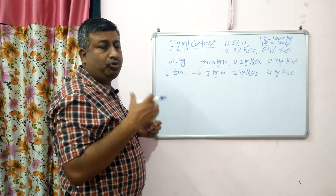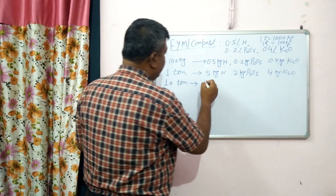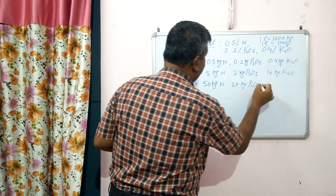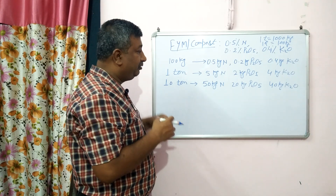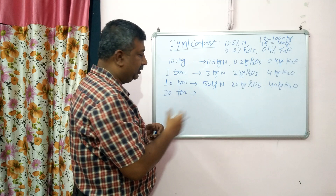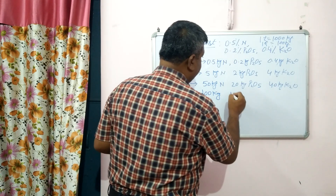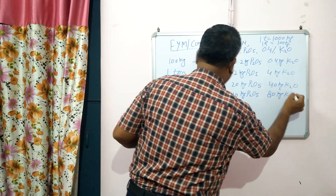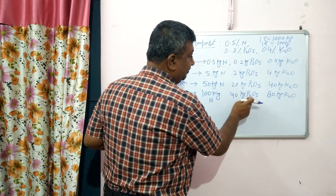The application rate is generally 10 to 20 tonnes per hectare. If we apply 10 tonnes per hectare, we get 50 kg nitrogen, 20 kg P₂O₅ phosphorus, and 40 kg potassium. If we apply 20 tonnes per hectare — a huge quantity applied in orchards or long-duration crops — it doubles: 100 kg nitrogen, 40 kg phosphorus, and 80 kg potassium.